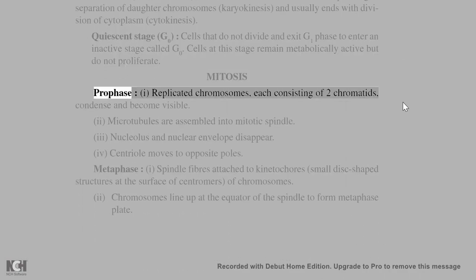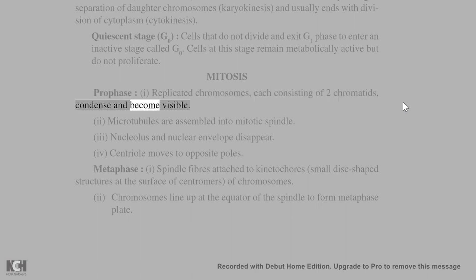Mitosis Prophase: (1) Replicated chromosomes, each consisting of 2 chromatids, condense and become visible. (2) Microtubules are assembled into mitotic spindle. (3) Nucleolus and nuclear envelope disappear.